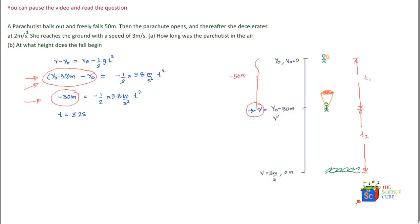Before finding t2, let's find the velocity of the parachutist just before his parachute opens. We use v' equals v0 minus g*t, so v' equals 0 minus 9.8 m/s² times 3.2 seconds, which gives v' equal to minus 31 meters per second. The negative sign indicates he's falling in the downward direction.